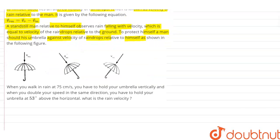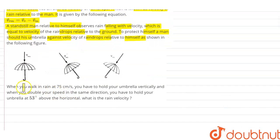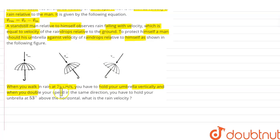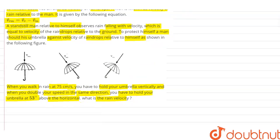The question is asking: when you walk in the rain at 75 centimeters per second, you have to hold your umbrella vertically. When you double your speed in the same direction, you have to hold your umbrella at 53° above the horizontal. We have to find the rain velocity.